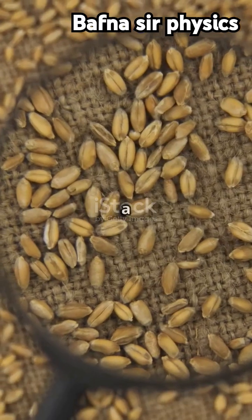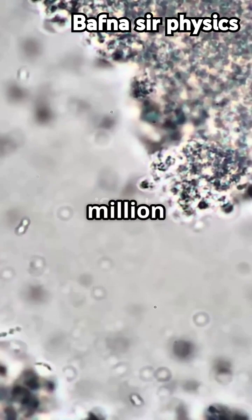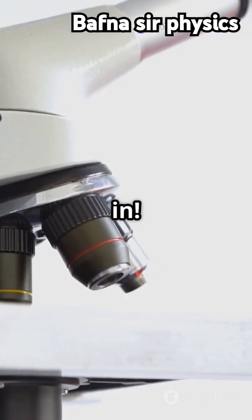Imagine trying to see a grain of sand with a magnifying glass. Now what if you wanted to see something a million times smaller? That's where electron microscopes come in.